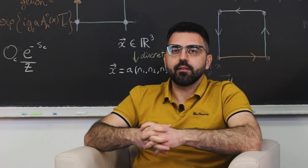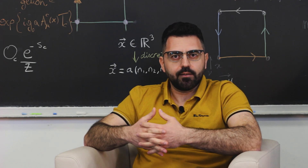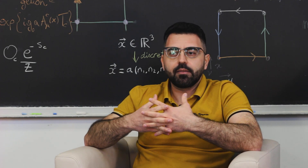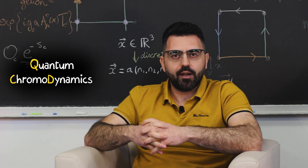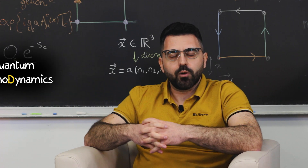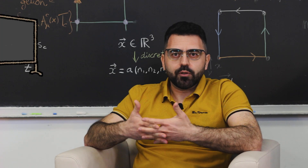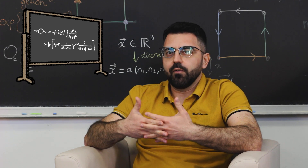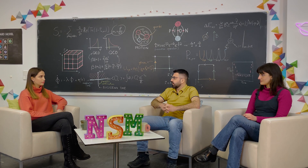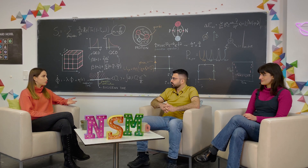It might sound surprising, but there are still lots of properties of hadrons that we do not understand. That's because the theory that describes the properties of hadrons, which is called quantum chromodynamics, or QCD in short, is a very complicated one. For this reason we cannot rely on blackboard calculations to calculate properties of hadrons as we do, for instance, with electrons and photons. And that's why instead we have to rely on computer simulations.